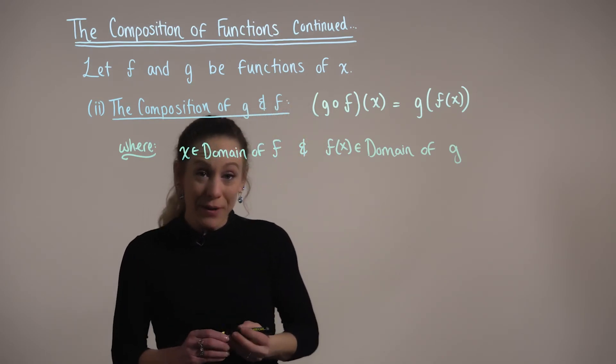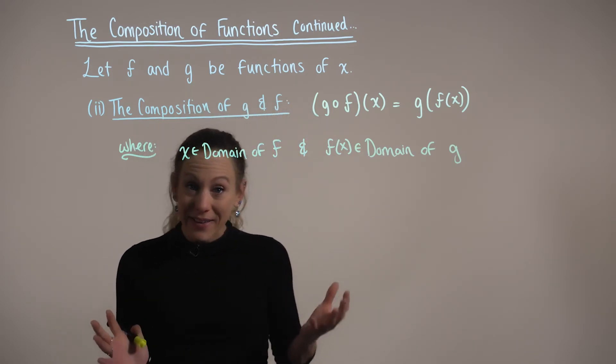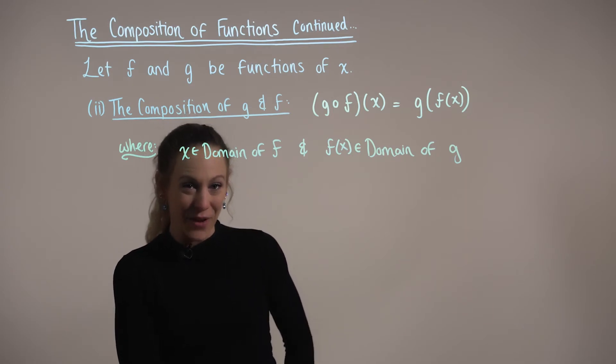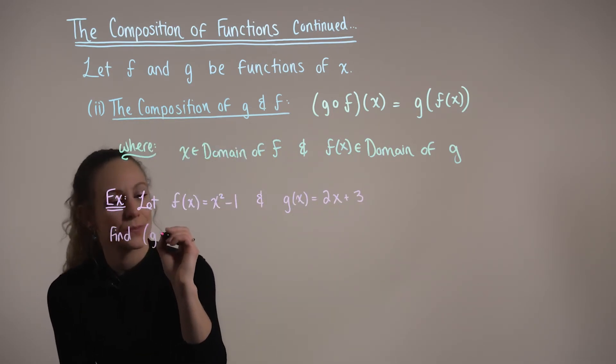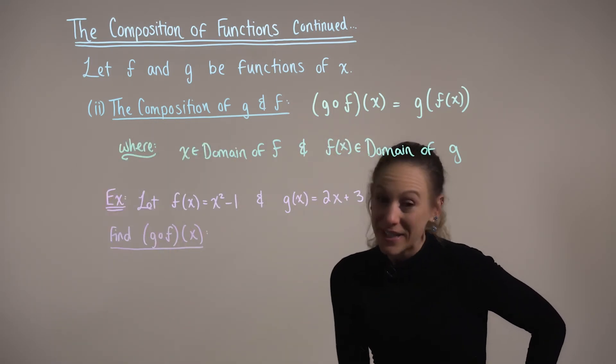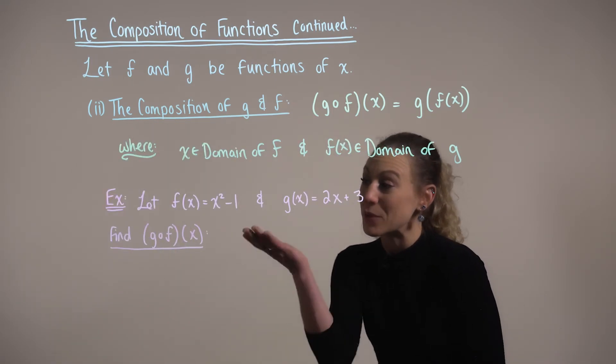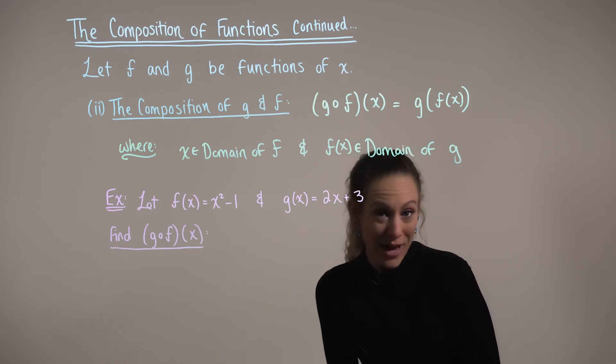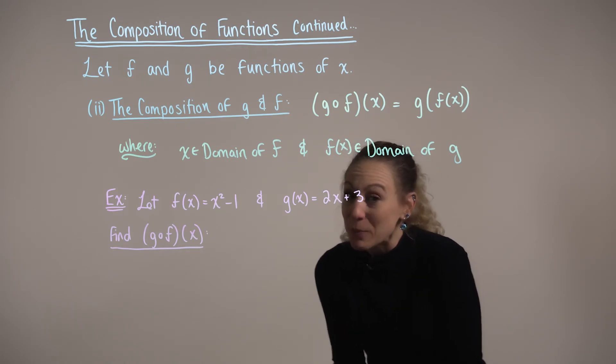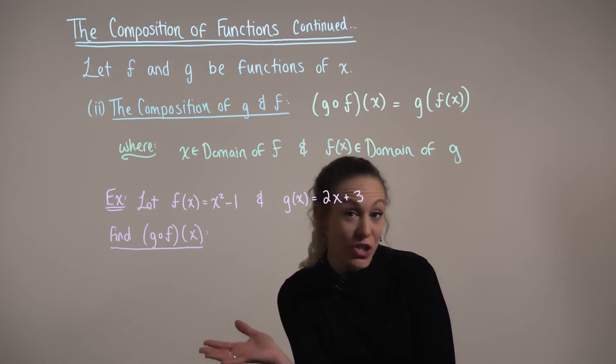And again, to better appreciate what exactly is going on with these compositions, let's consider the following example. So in this case, we are given the functions f of x is equal to x squared minus 1, and g of x is equal to 2x plus 3. And we're being asked to find the composition g of f.